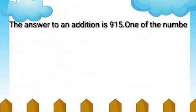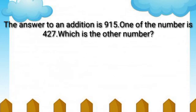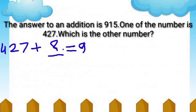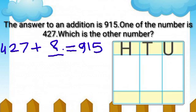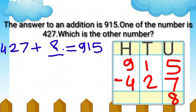Next example: the answer to an addition is 915. One of the numbers is 427. Which is the other number? Let's arrange the subtraction: 915 minus 427 is equal to 488. So the other number is 488.